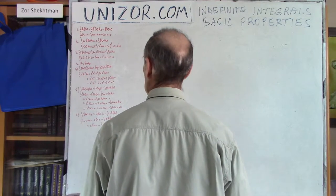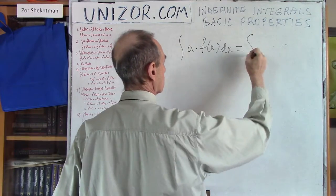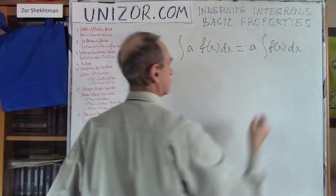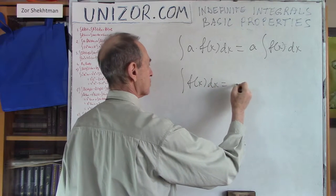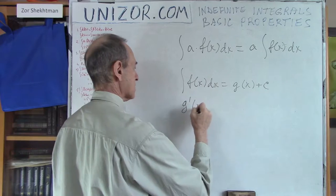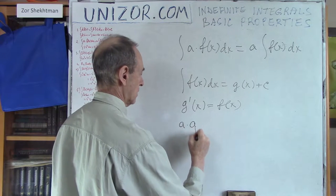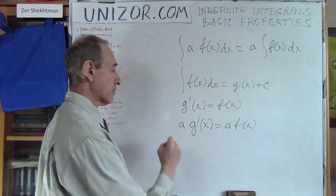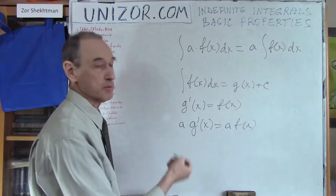My second property is kind of expected: the integral of a constant times a function is equal to — you can take the constant outside of the integral. To prove this, assume that integral of f(x)dx equals g(x) plus c. That means the derivative of g(x) is equal to f(x). From this, we can multiply both sides by a constant.